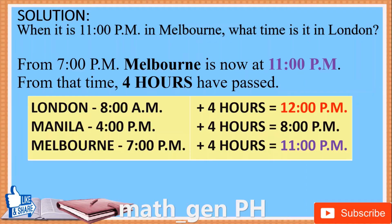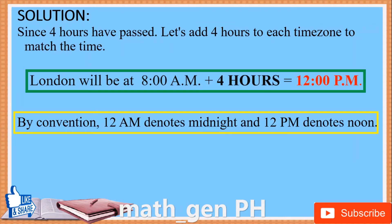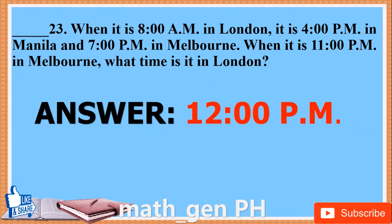Solution. When it is 11 PM in Melbourne, what time is it in London? From 7 PM, Melbourne is now at 11 PM, so 4 hours have passed. Since 4 hours have passed, let's add 4 hours to each time zone. London will be at 8 AM plus 4 hours equals 12 PM. By convention, 12 PM denotes noon. Answer: 12 PM.